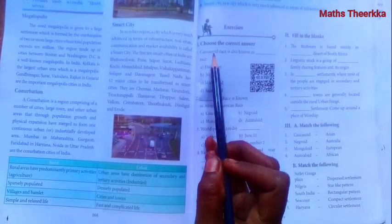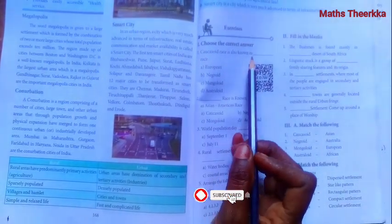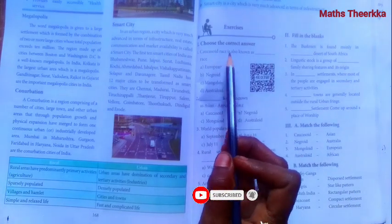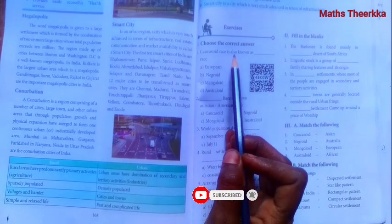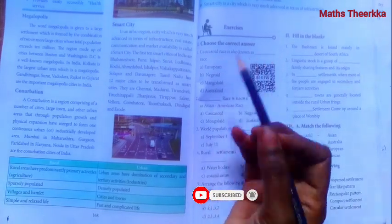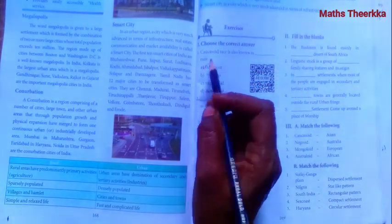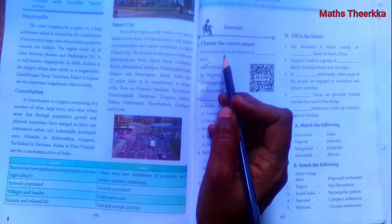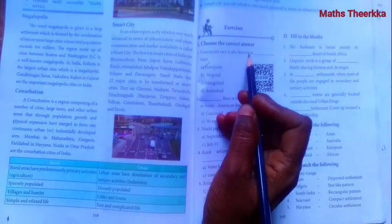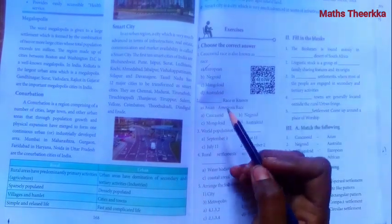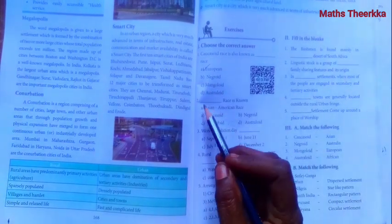First one: Caucazoid race is also known as European race. Caucazoid race is also known as European race.